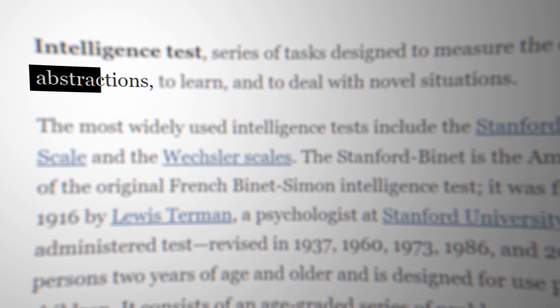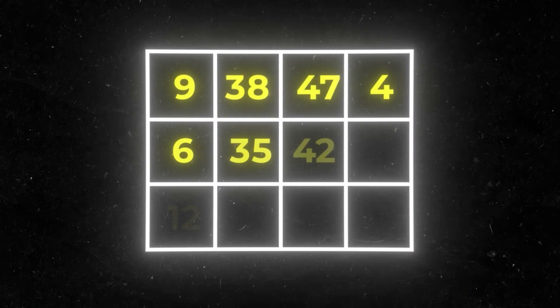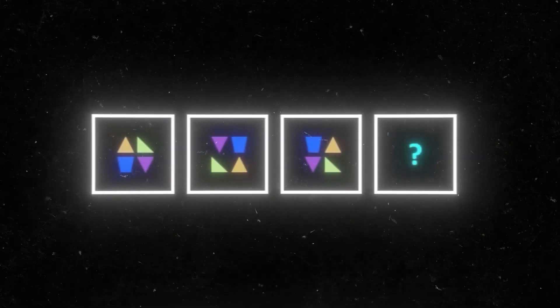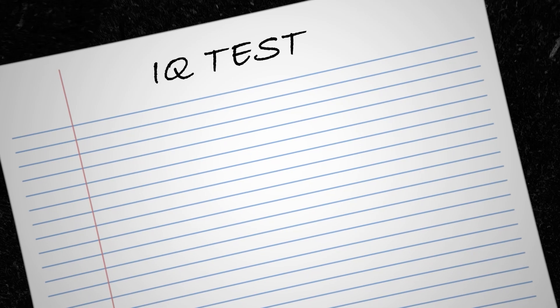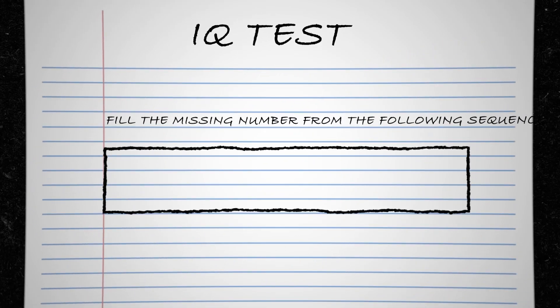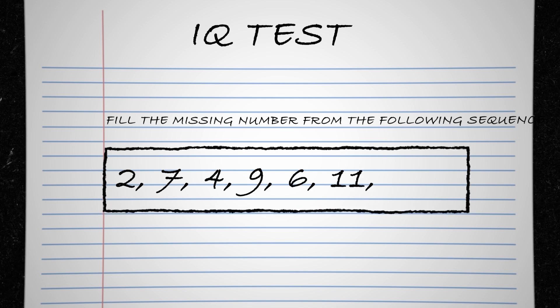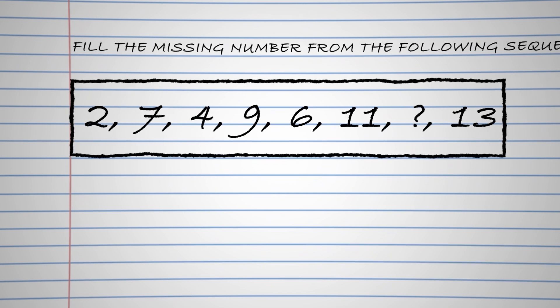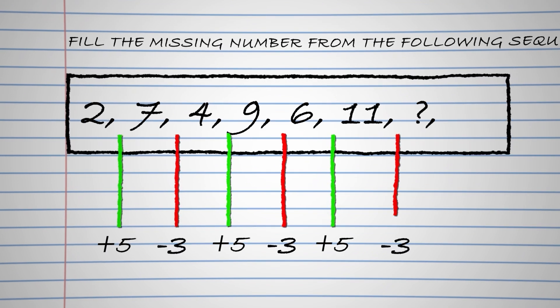IQ tests deal with abstractions. You answer questions about hard logic, such as filling in missing pieces of a numerical or geometric sequence. For example, you might find questions like this in an IQ test. Fill in the missing number from the following sequence: 2, 7, 4, 9, 6, 11, and the last one being 13. The sequence alternates between adding 5 and subtracting 3. The right answer would be 8.